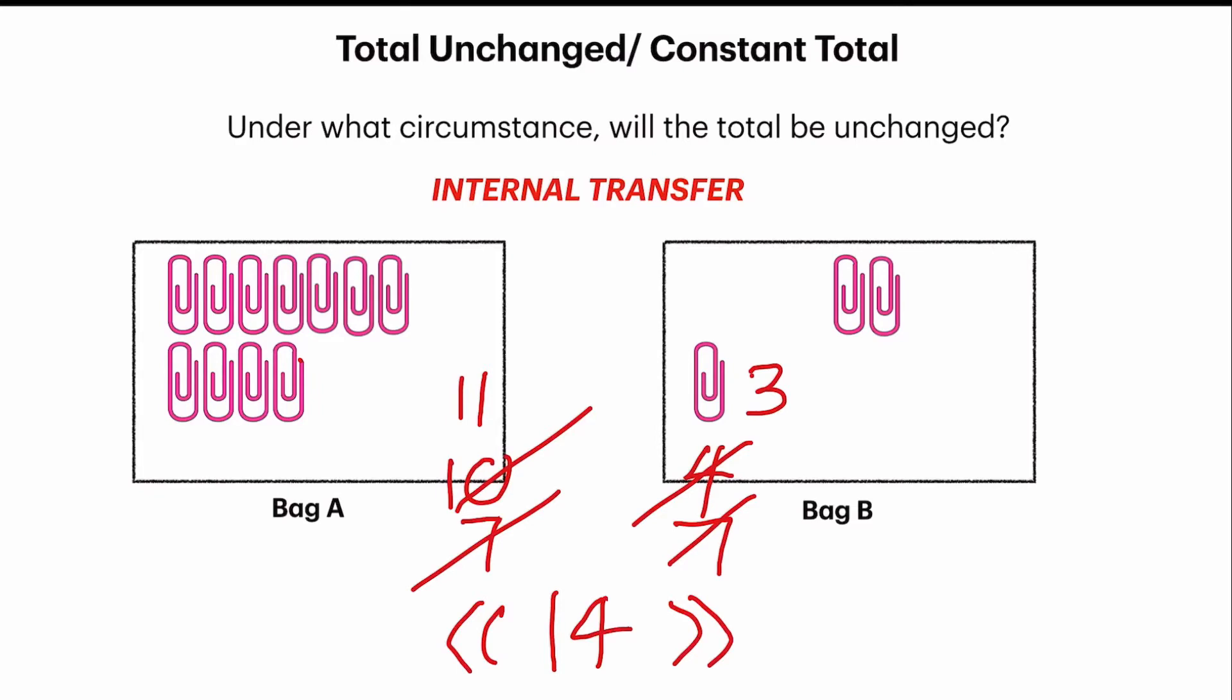So, in conclusion, whenever there is an internal transfer of no matter how many items, regardless of quantity, the total will always remain the same. That's provided you make an internal transfer. So, that's what we call constant total or total unchanged when we have an internal transfer in the story that's covered.